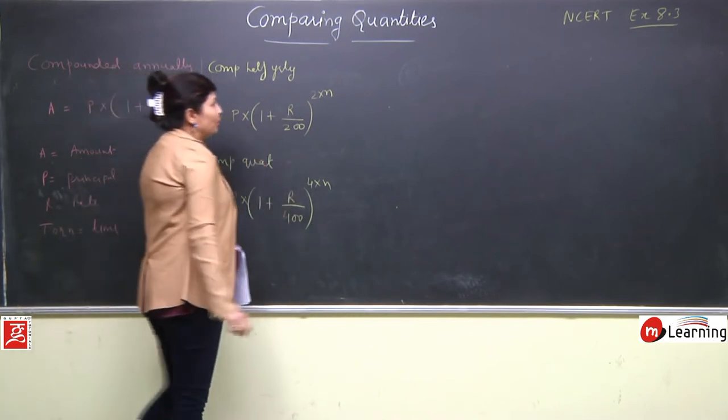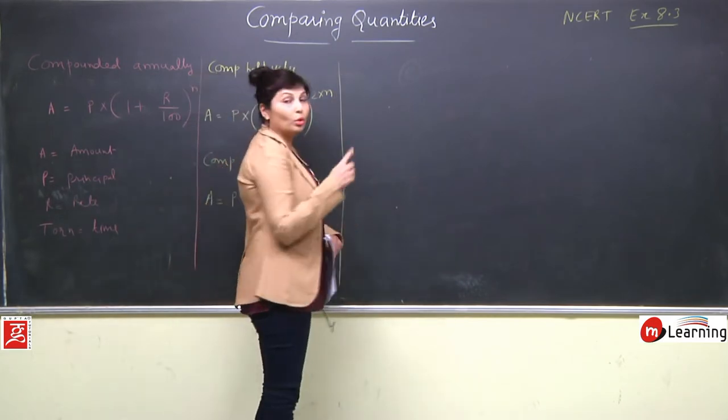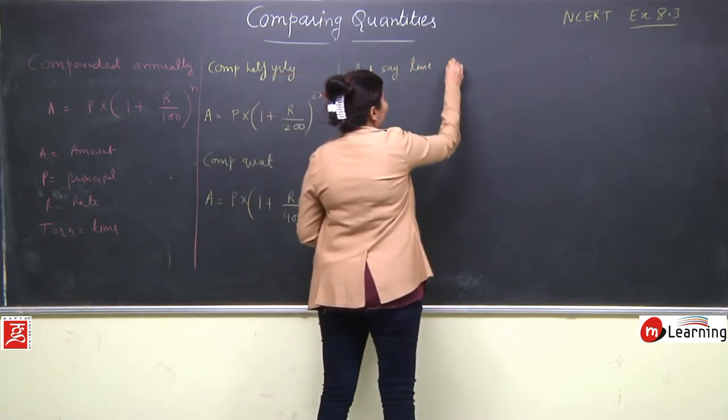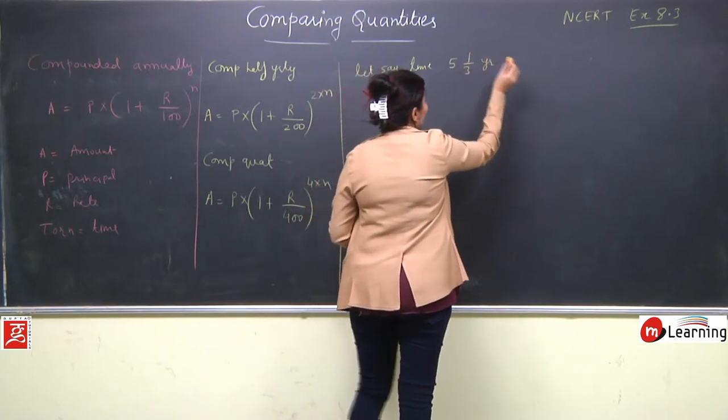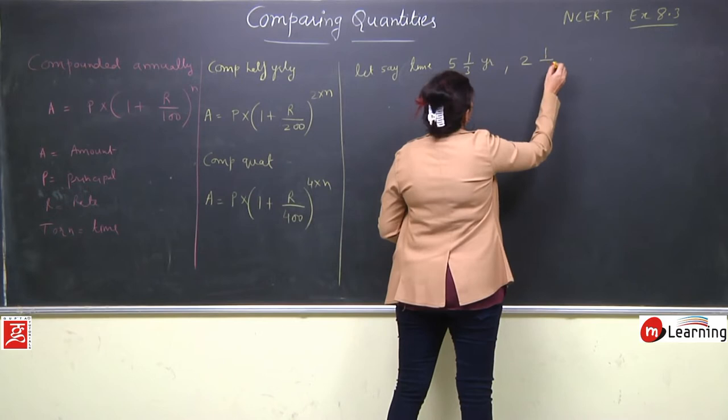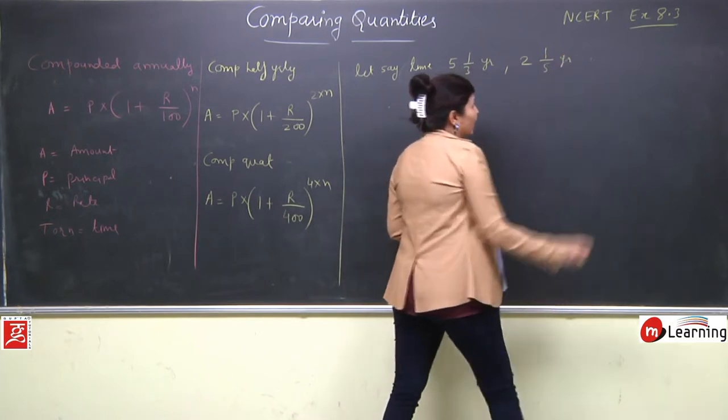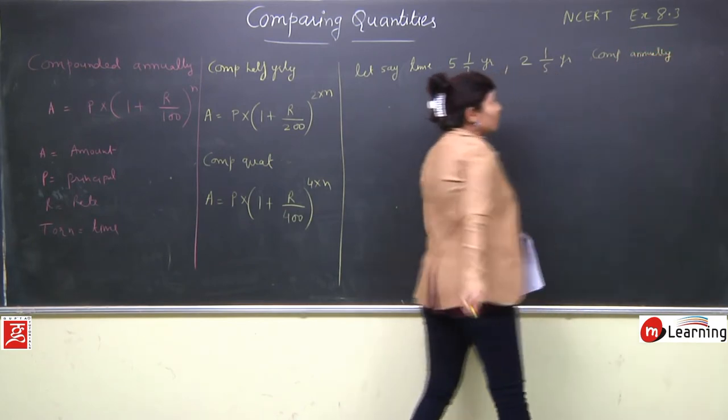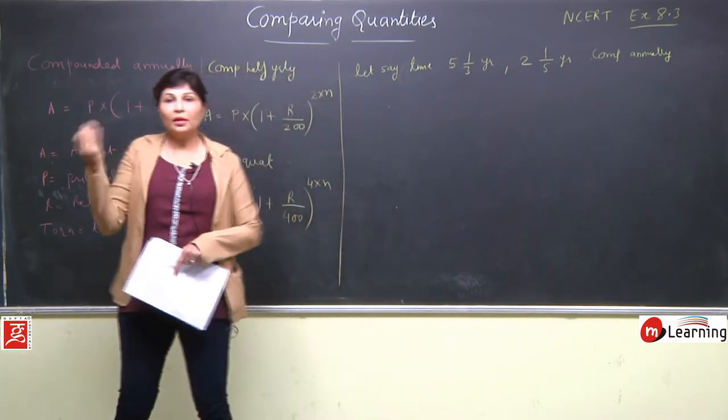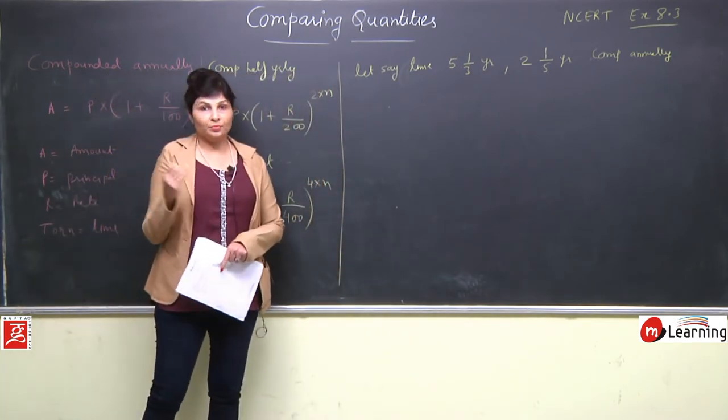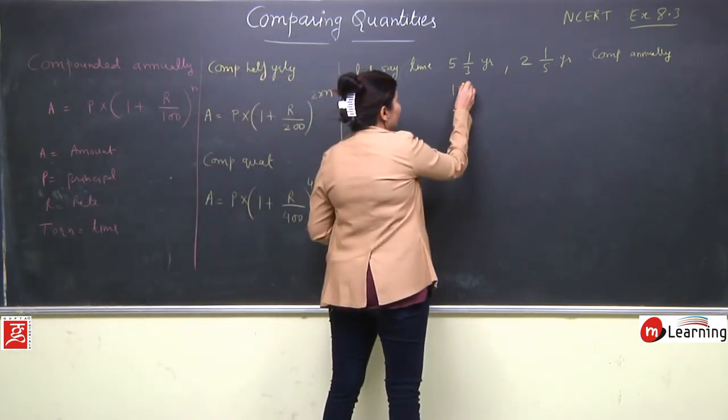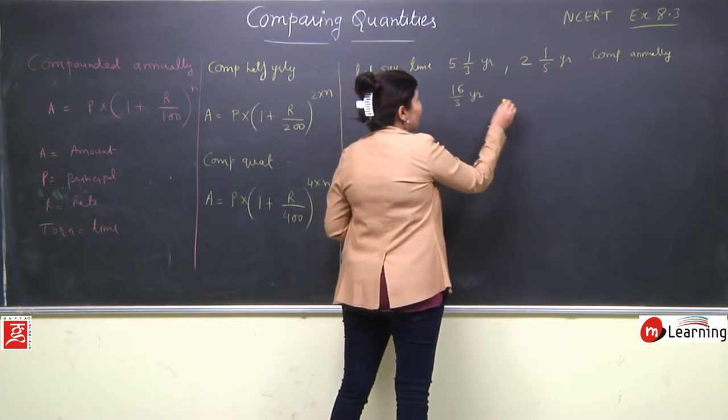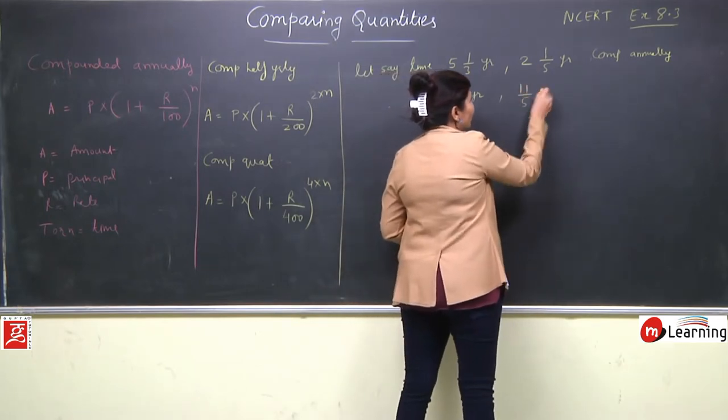After that, an important case: when time is given as a mixed fraction like 5 and 1/3 years or 2 and 1/5 years, but it is compounded annually. Since it's annually, we cannot halve the rate or double the time. How do we handle the fraction?